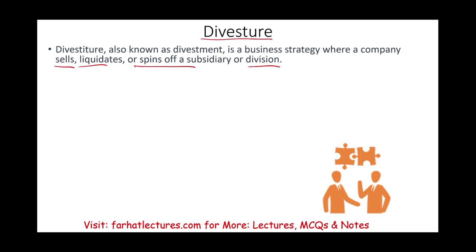In the prior session, we looked at mergers — when two companies basically merge together. We talked about horizontal mergers, vertical mergers, and circular mergers, also called combinations. Here, what's happening is the opposite: they are separating. Either you're selling the division, liquidating, or spinning off a subsidiary.